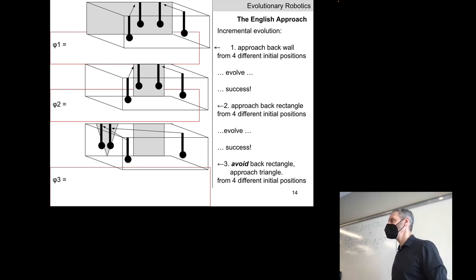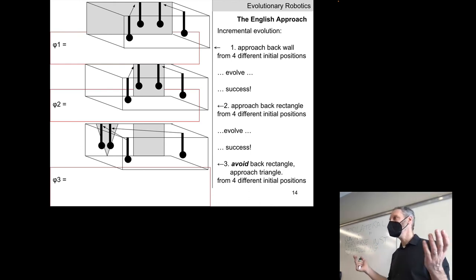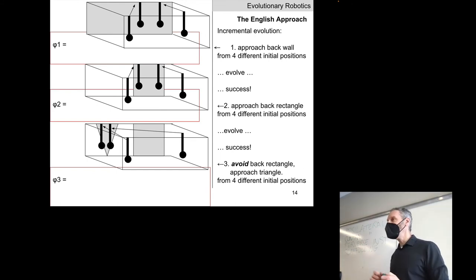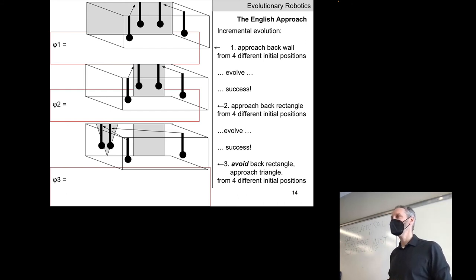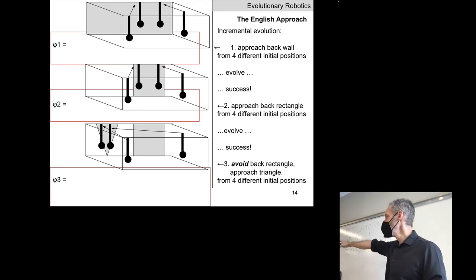What are the three fitness functions phi1, phi2, phi3? The final behavior is: drive towards the triangle and away from the rectangle. Phi1 simply selects for neural networks that always drive the gantry towards the back wall. Phi2 places a black rectangle either back-right or back-left, and the neural network should drive the gantry towards wherever the rectangle is. Phi3 — the final form — selects for driving towards the triangle and away from the rectangle.